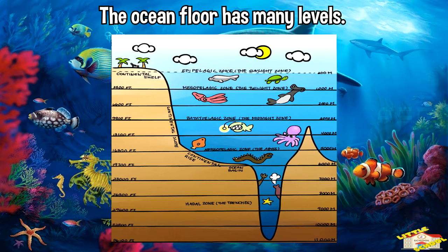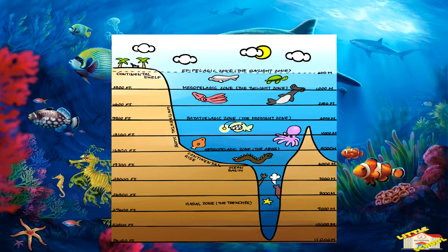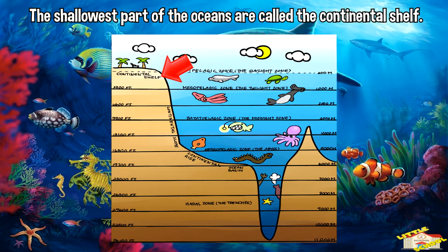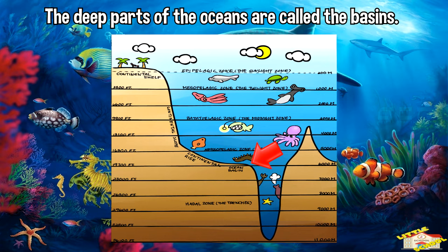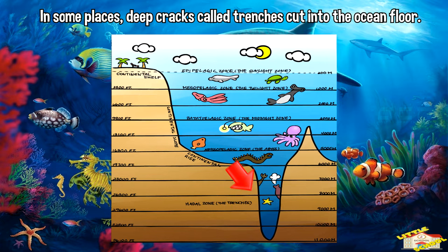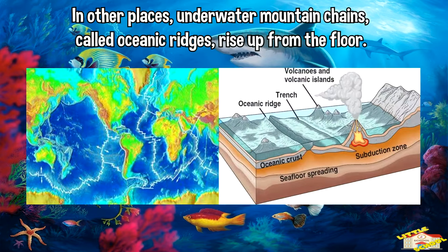The ocean floor has many levels. The shallowest parts of the ocean, called the continental shelf, lie along the edges of the continents. The edges of the continental shelf slope down toward the deep parts of the oceans, called the basins. In some places, deep cracks called trenches cut into the ocean floor. In other places, underwater mountain chains called ocean ridges rise up from the floor.